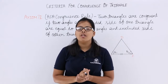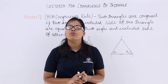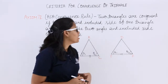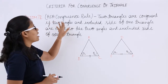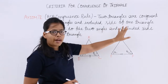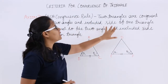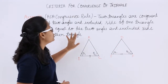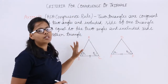Hello guys, today in this video lecture I am going to discuss another criteria for the congruence of triangles. So let's see what our axiom says. Axiom 7.2 is ASA, which means Angle-Side-Angle congruence rule. Two triangles are congruent if two angles and the included side of one triangle are equal to the two angles and included side of the other triangle.